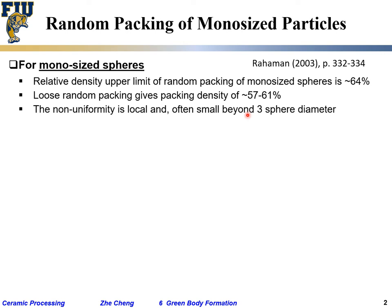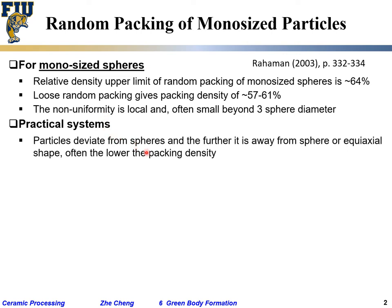Now going from mono-sized spheres, which are idealized, to practical systems: particles deviate from spheres — maybe close, but not exact in most cases — and deviate from mono-sized, being more like anisotropic with different dimensions along different directions. Quite often they give lower packing density, which makes sense as common sense.